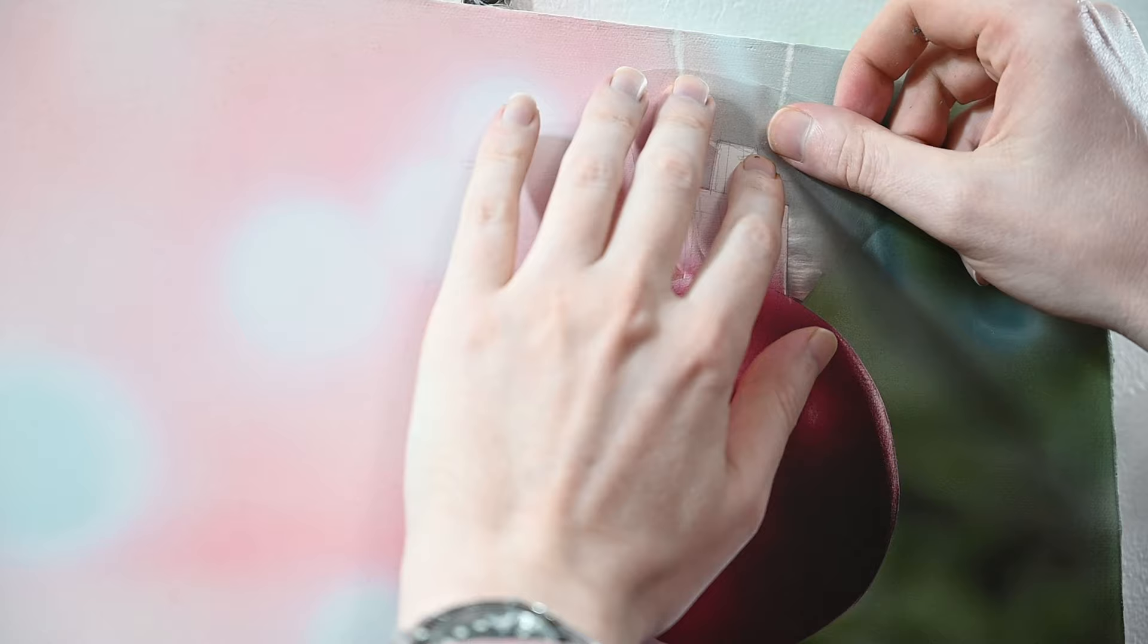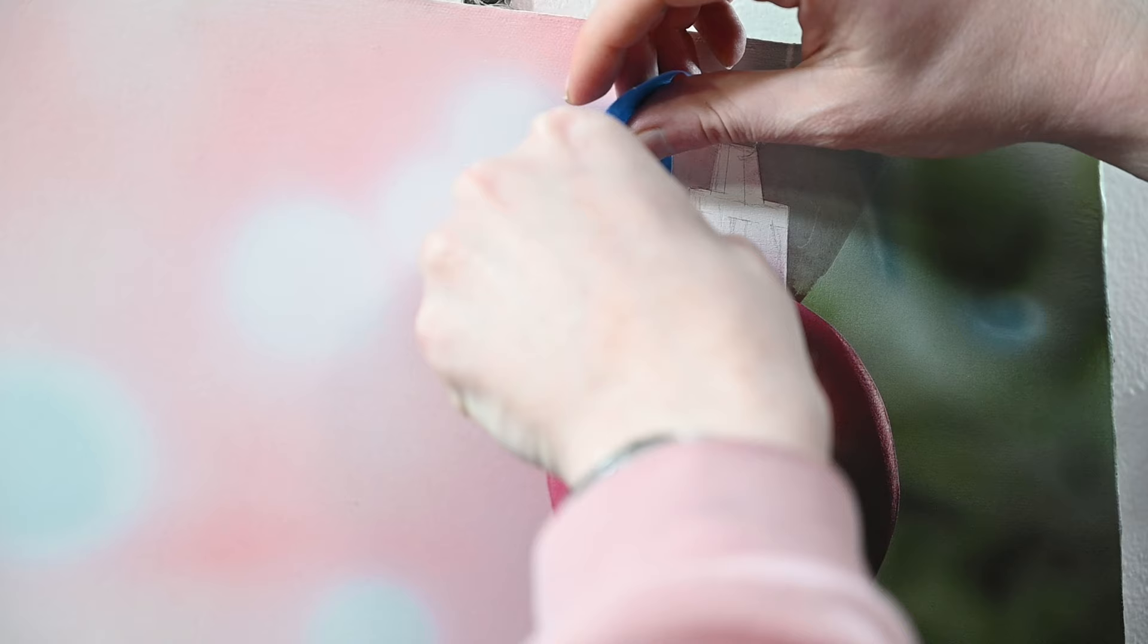Just like before, I'm going to add a small piece of blue painter's tape on the left side here. That's just going to help prevent overspray from getting on the left side of the canvas.